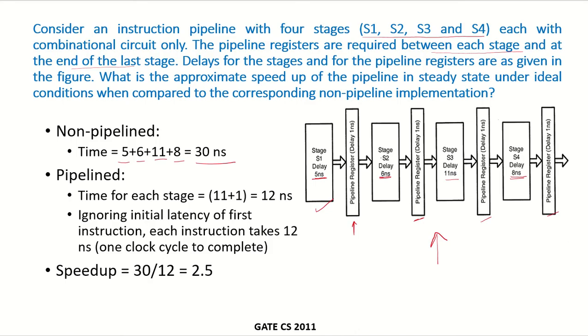If it is a pipelined implementation, then the clock cycle would be the maximum of the time that is required by each stage because each stage has to complete its task in one clock cycle. The clock cycle time should be the maximum time required by the different stages. We see here that 11 nanoseconds is the maximum time required by any stage plus the time that will be required by the inter-stage buffer which is 1 nanosecond. So the time for each stage would be 11 plus 1, 12 nanoseconds.